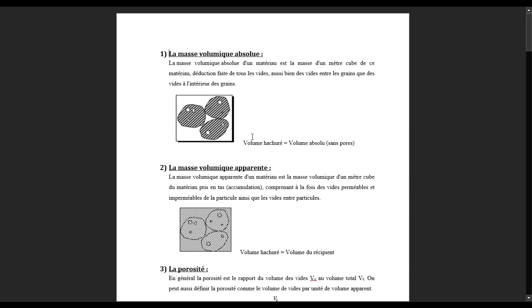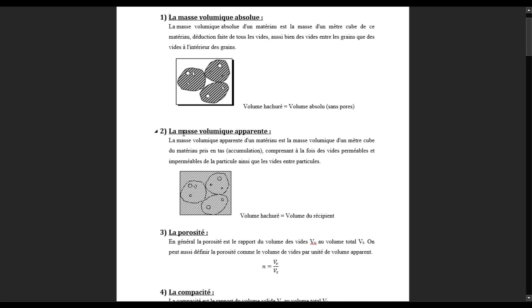Donc sur le petit schéma, le volume solide est égal à la masse volumique absolue — pas de vide, pas d'eau, pas d'air. Pour la deuxième masse, c'est la masse volumique apparente. La masse volumique apparente, c'est tout ce qu'on perçoit. C'est ce qu'on voit lorsqu'on observe un objet, que ça soit des vides extérieurs ou intérieurs compris.